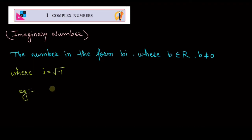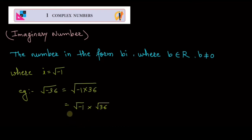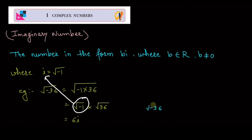Let us take an example: √(-36) can be written as √((-1) × 36). Separating the roots, we get √(-1) × √36 = √(-1) × 6, which equals 6i, since √(-1) = i. So √(-36) is nothing but 6i — this is an example of an imaginary number.